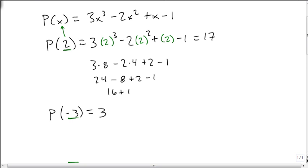So we get 3(-3)³ - 2(-3)² + (-3) - 1. Well, (-3)³ is -27, and (-3)² is positive 9, so we have 3(-27) - 2(9) - 3 - 1.